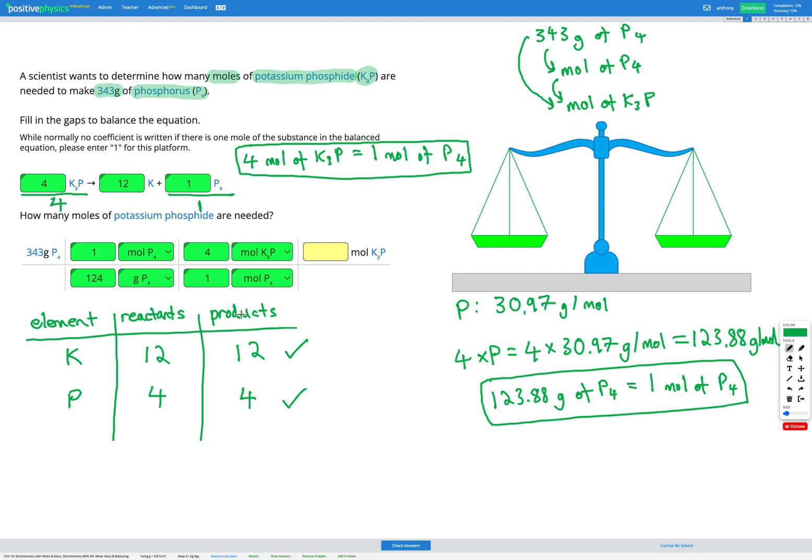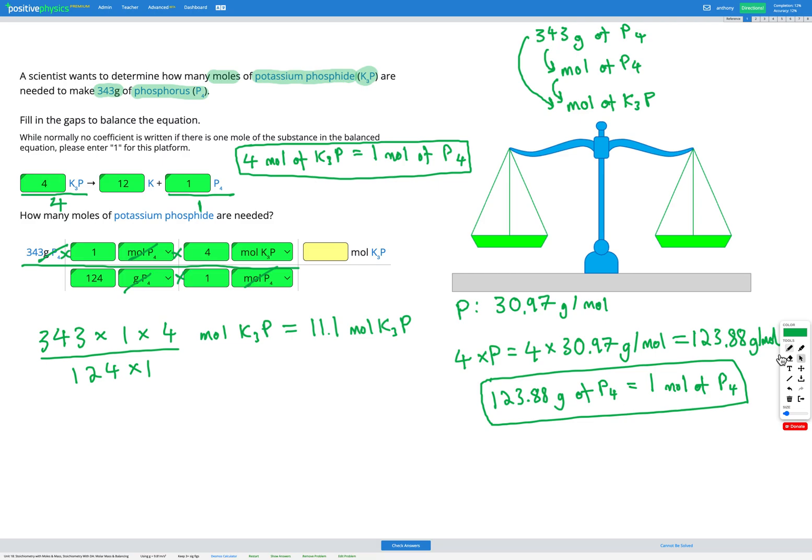So we've got our dimension analysis table all set up. Now we need to cancel units that are the same on the top and the bottom. So I'm canceling grams of P4. I'm canceling moles of P4. And I'm just left with moles of K3P, which is good because that's what we're trying to figure out. Now I need to multiply everything on the top, multiply everything on the bottom, and divide. So that gets me 343 multiplied by 1 multiplied by 4 moles of K3P divided by 124 times 1. So if I put that in my calculator, I get 11.1 moles of K3P, which I can put in my answer box here.